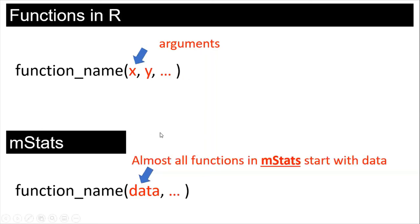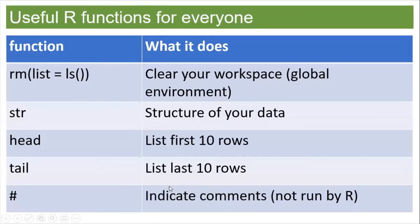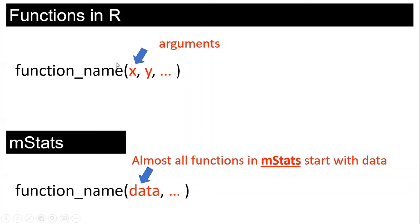For mstack, almost every function starts with the data argument. You have to know the function name, the round brackets, and the arguments inside. You don't have to put every argument — just the important ones. For mstack, data is the important one, and we will discuss more over the next few days.